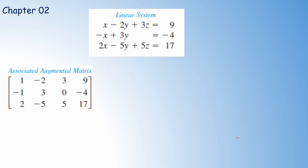For the first equation, x minus 2y plus 3z equals 9, we get the first row: coefficients 1, minus 2, and 3 on the left-hand side, and constant 9 on the right-hand side. For the second row, we have minus 1, 3, 0 — because there is no z term in the equation — and right-hand side minus 4. For the third equation, we have coefficients 2, minus 5, and 5, and right-hand side 17. This is the corresponding augmented matrix.